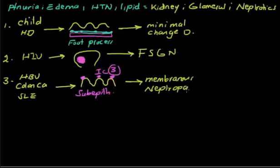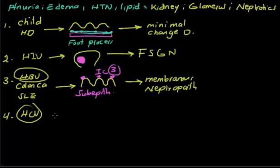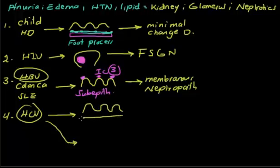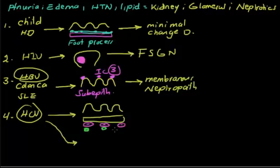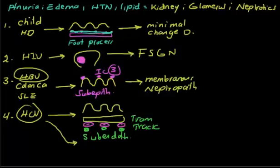Moving on to the final disease. Now the cause is hepatitis C virus — differentiate this: in membranous nephropathy it is hepatitis B virus, while hepatitis C virus is a cause here. Looking at the tissue again: below the epithelial cells is the basement membrane, and below the basement membrane are endothelial cells, because we're now talking about the capillary space. On the endothelial cells there is a deposit — this is a sub-endothelial deposit, also called tram-track appearance.